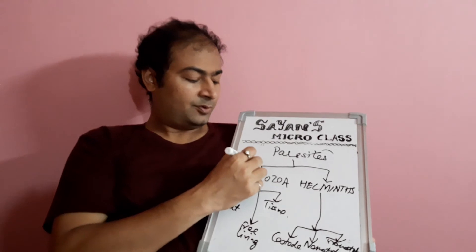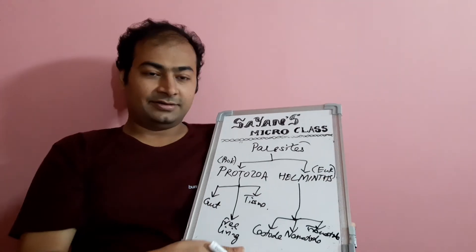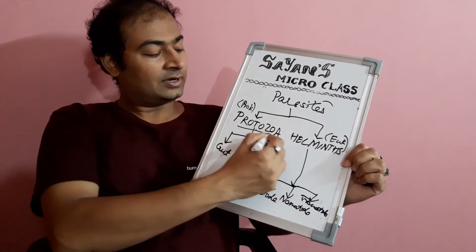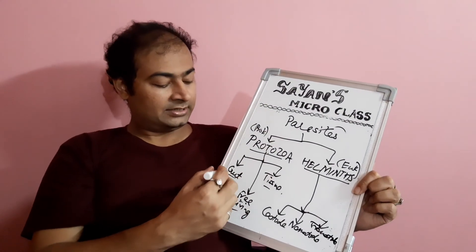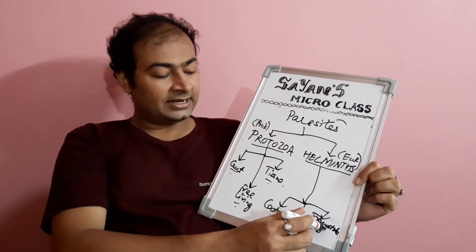Protozoa are prokaryotic while helminths are eukaryotic. In the next classes we will study more about this classification and the details of protozoa, helminths, and their sub-classifications. These are very important — the gut protozoa, tissue protozoa, free-living protozoa, and the helminths: cestodes, nematodes, and trematodes. Till then, goodbye — we will meet again in the next class. Keep commenting, liking my video, subscribing, pressing the bell icon, and keep supporting Shan's Micro Class. Thank you.